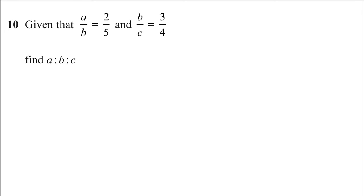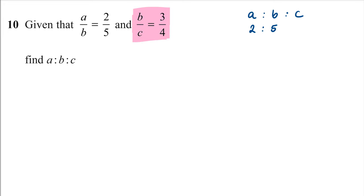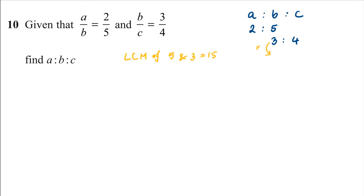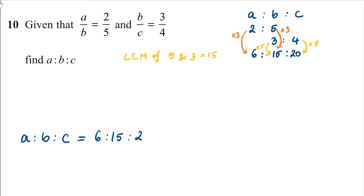Question 10. Given that A over B equals 2 over 5 and B over C equals 3 over 4, find the ratio A to B to C. The ratio A to B is 2 to 5 and B to C is 3 to 4. The lowest common multiple of 5 and 3 is 15. To get B equal to 15: multiply 3 to 4 by 5 to get 15 to 20; multiply 2 to 5 by 3 to get 6 to 15. So the ratio A to B to C equals 6 to 15 to 20.